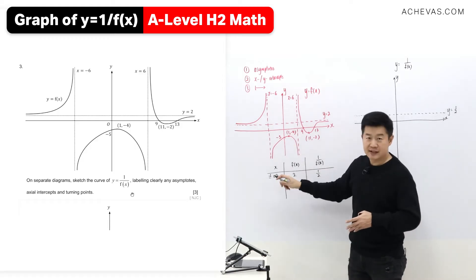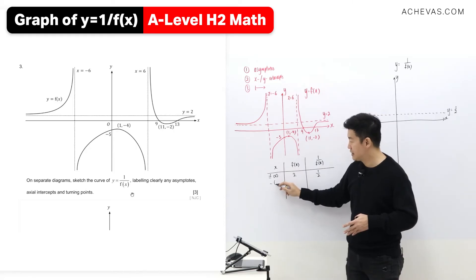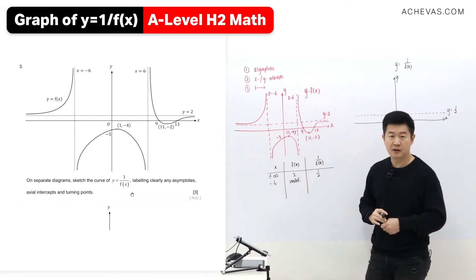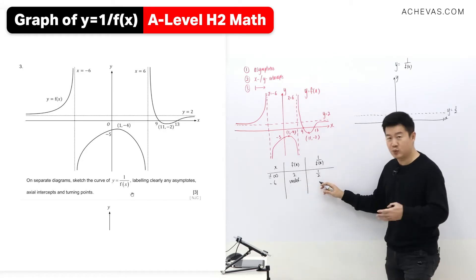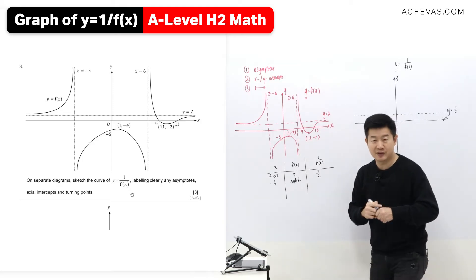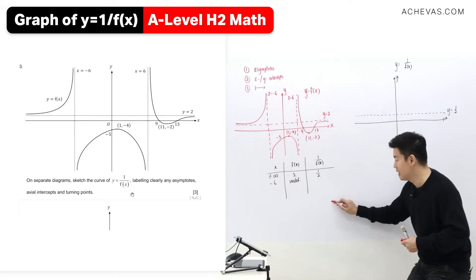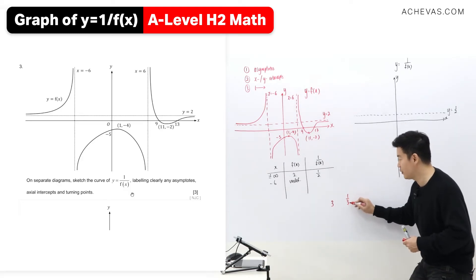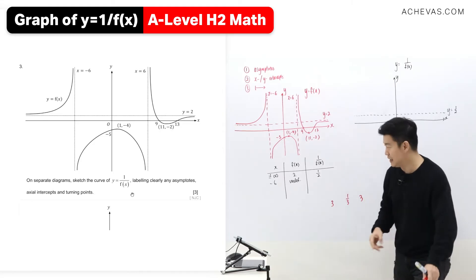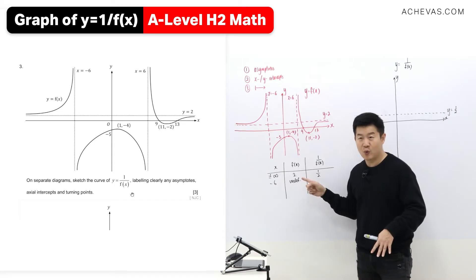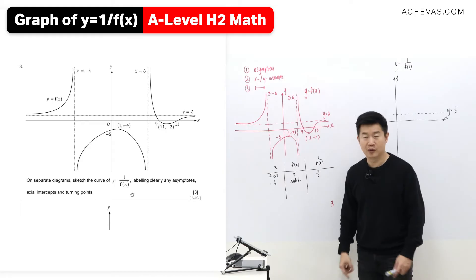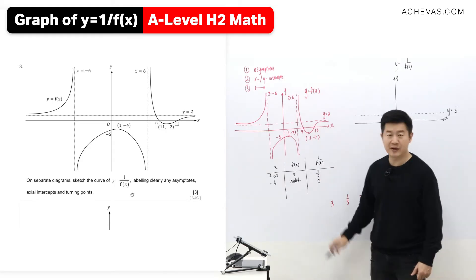For the vertical asymptote: when x is equal to minus 6, f(x) is undefined. So 1 over f(x) is 1 over undefined. We discussed the nature of reciprocals — if I reciprocal 1 over 3, I get back 3. Because I cannot do 1 over undefined, I ask: 1 over what gives me undefined? The answer is 0, because 1 over 0 gives undefined.